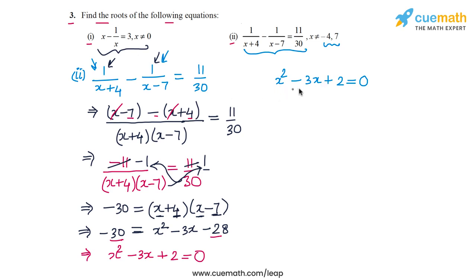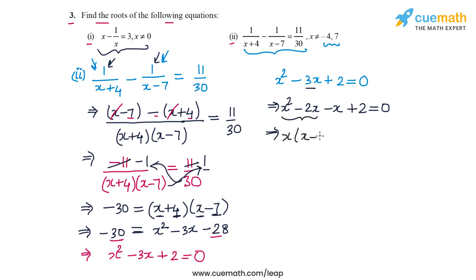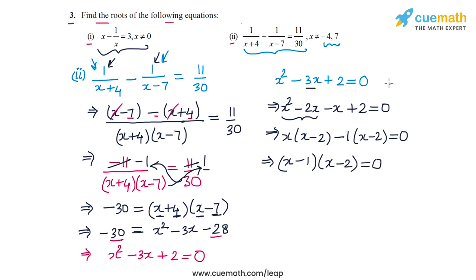We factorize by splitting -3x as -2x - x, giving x(x-2) - 1(x-2) = 0, so (x-1)(x-2) = 0. From this we can conclude that the two roots are x = 1 and x = 2, which solves part 2 of this question.